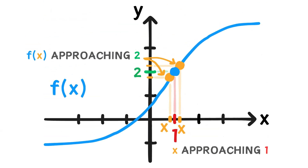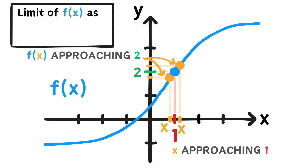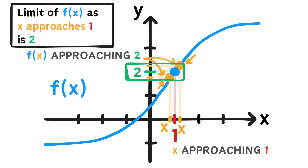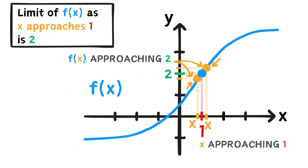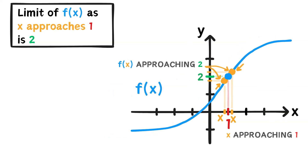In our example, we would say that the limit of our function, f of x, as x approaches 1 is 2. To notate a limit, first we write LIM for limit. And under this, we put the x point and an arrow pointing towards the value it's approaching. To the right of this, we put our function.